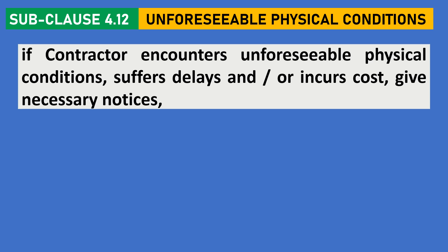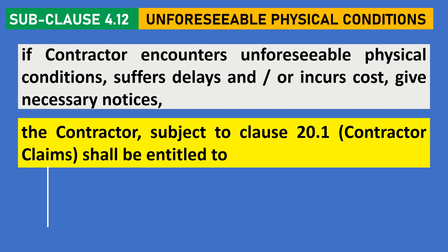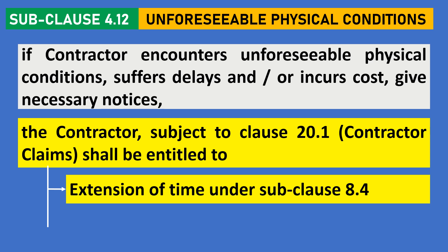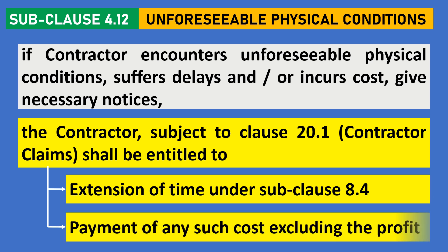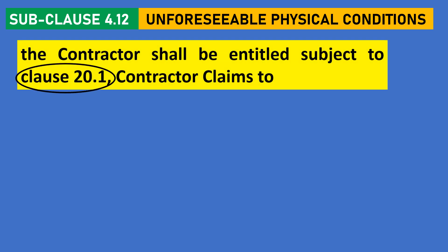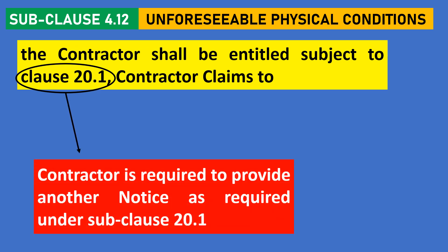If the contractor encounters unforeseeable physical conditions, suffers delays and/or incurs cost, and gives the necessary notifications, the contractor - subject to subclause 20.1 - shall be entitled to an extension of time under subclause 8.4 and payment of any such cost, excluding profit. Since the reference of subclause 20.1 has been provided, the contractor is required to provide another notice as required under subclause 20.1.